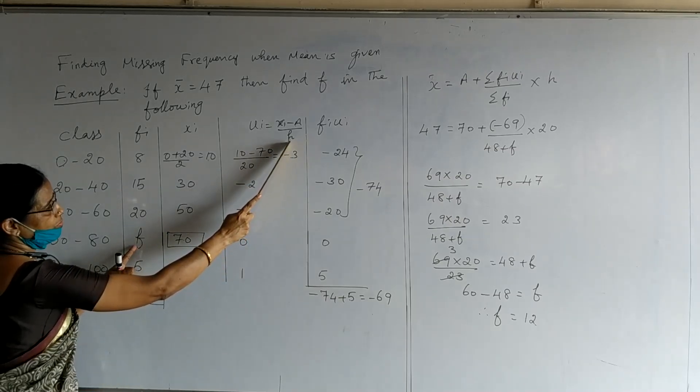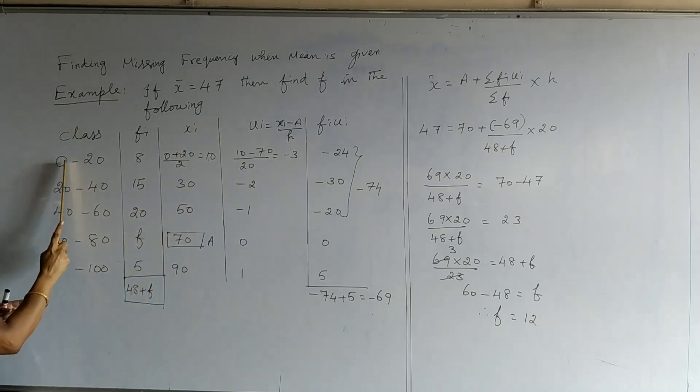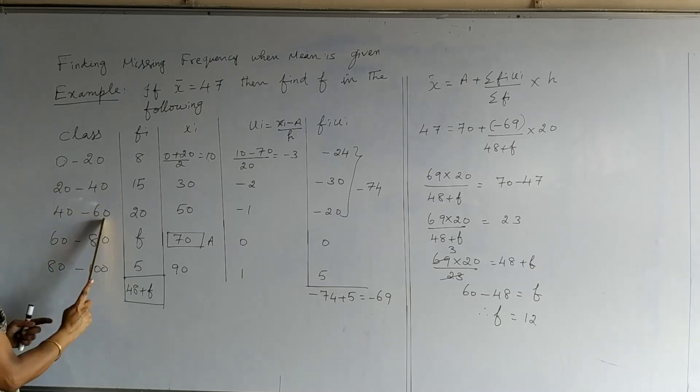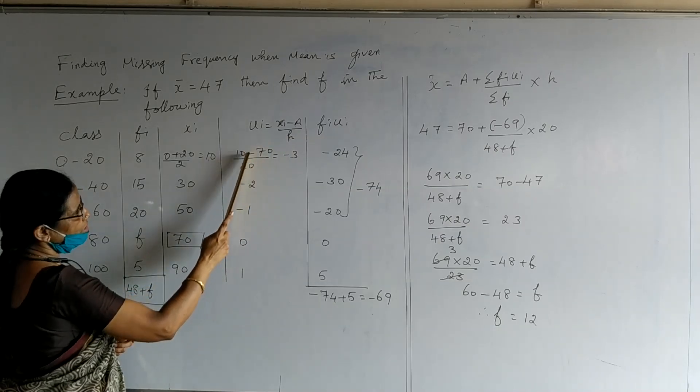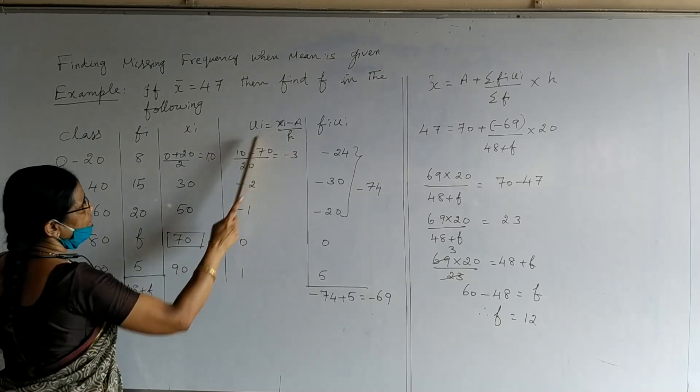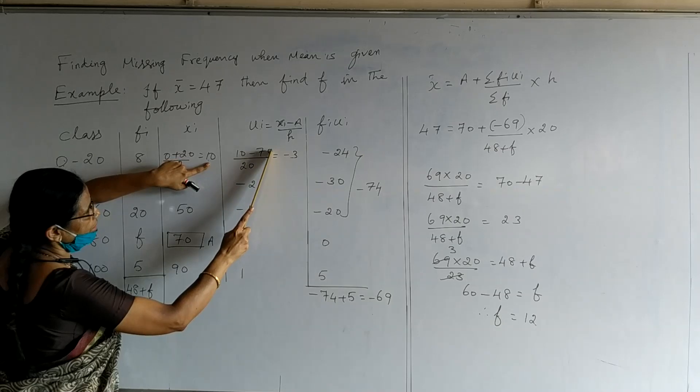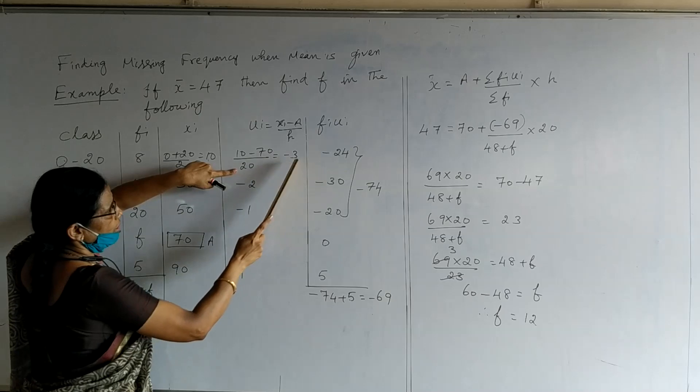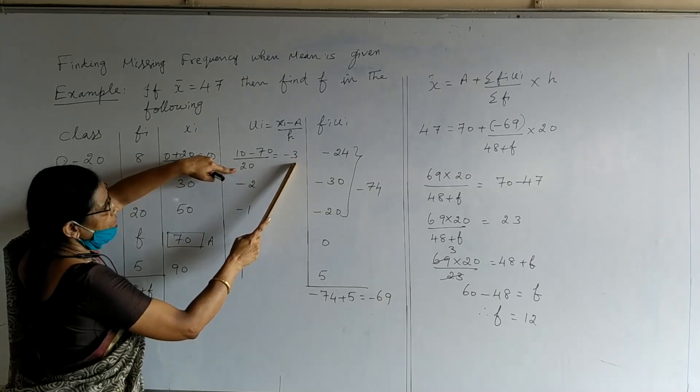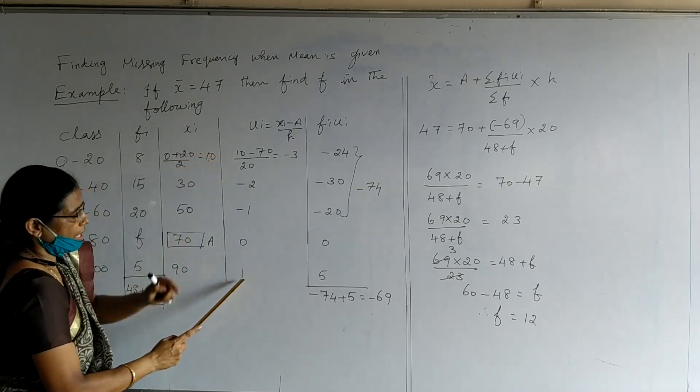And we know how to calculate h, h is the size of the class. This is calculated from the first class. You can see 0 to 20, 20 to 40, 40 to 60, they are equal and the difference gives 20. Therefore, the value of h is 20. The first ui entry is xi minus assumed mean, which we have marked as 70, divided by h, size of the class is 20. Therefore, it gives minus 3. Similarly, we get for the remaining classes minus 2, minus 1, 0, and 1.